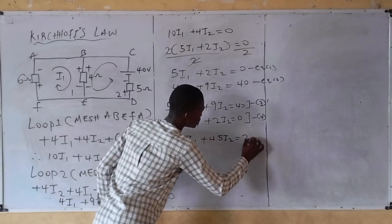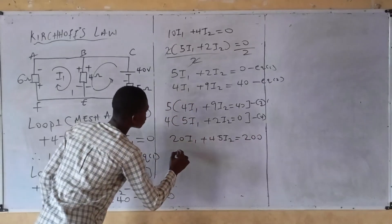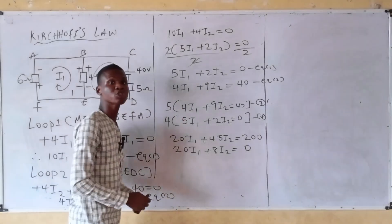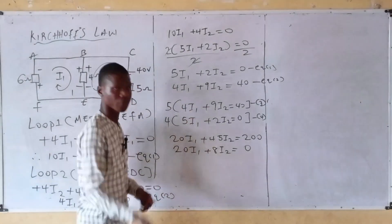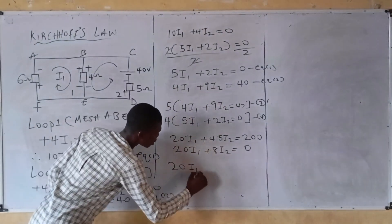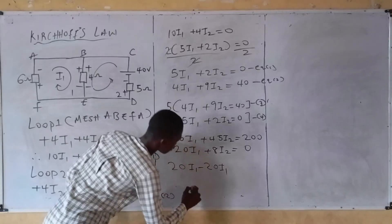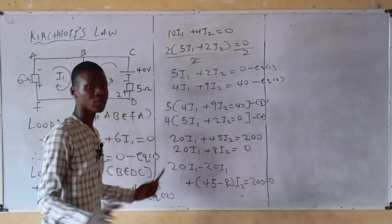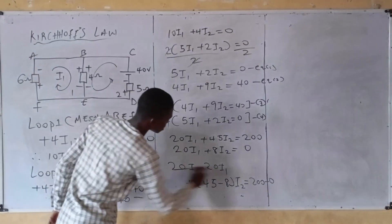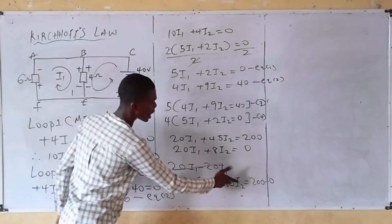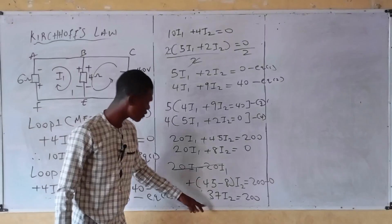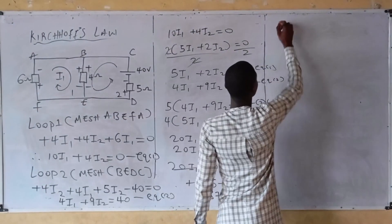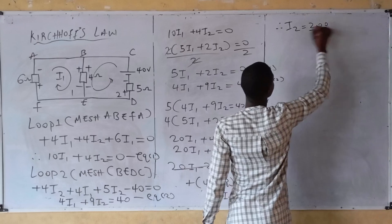Equation three expanded: 20 I1 plus 8 I2 equals zero. Equation two multiplied by five: 20 I1 plus 45 I2 equals 200. Subtracting equation three from equation four: 20 I1 minus 20 I1 cancels, leaving 45 minus 8 = 37, so 37 I2 equals 200. Dividing both sides by 37 gives I2 equals 200 divided by 37, which is approximately 5.4 amperes.